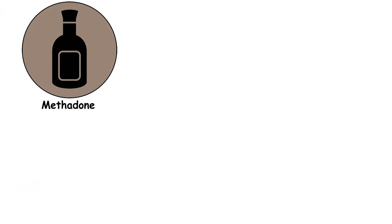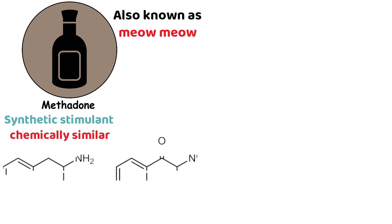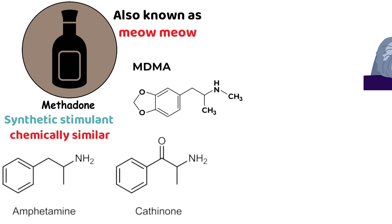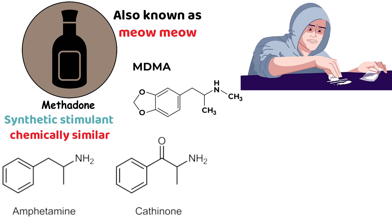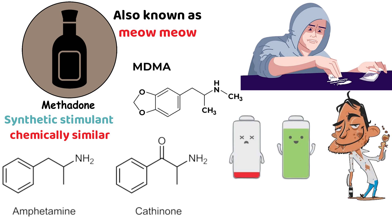Mephedrone, also known as Meow Meow, is a synthetic stimulant chemically similar to amphetamines and cathinone. It can produce effects similar to MDMA and cocaine, including euphoria, increased energy, and heightened sociability.